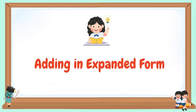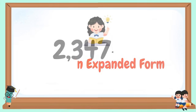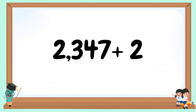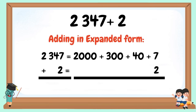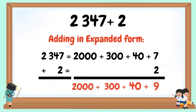Adding in expanded form: 2,347 + 2. In expanded form: 2,000 + 300 + 40 + 7 + 2 = 9 in the ones. Bring down 40, 300, and 2,000. Add these numbers: 2,000 + 300 + 40 + 9 = 2,349.